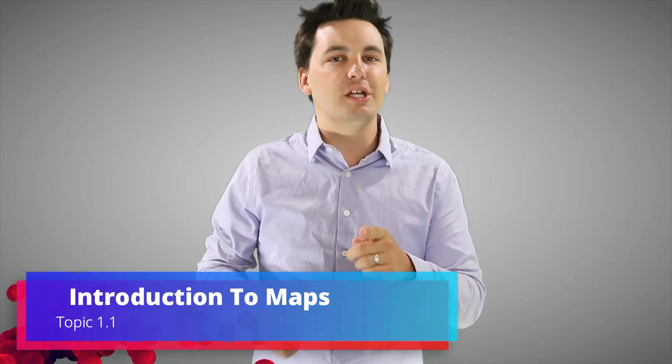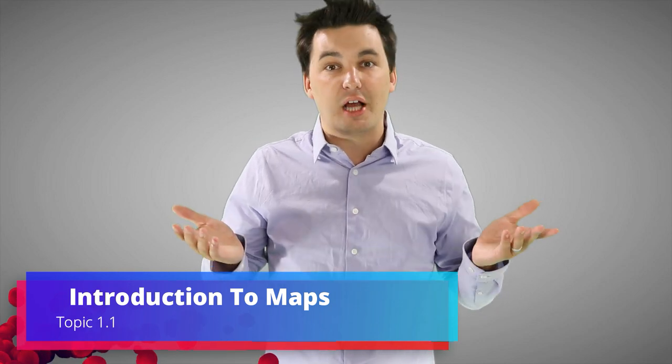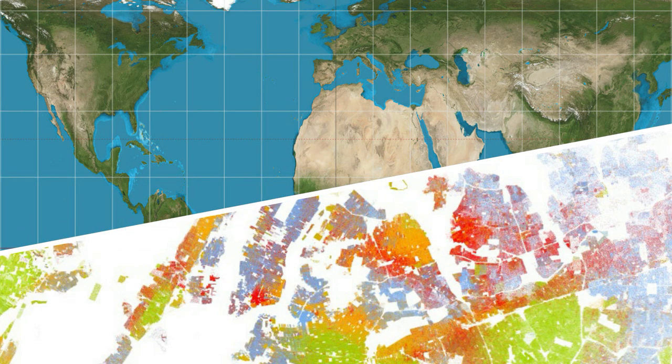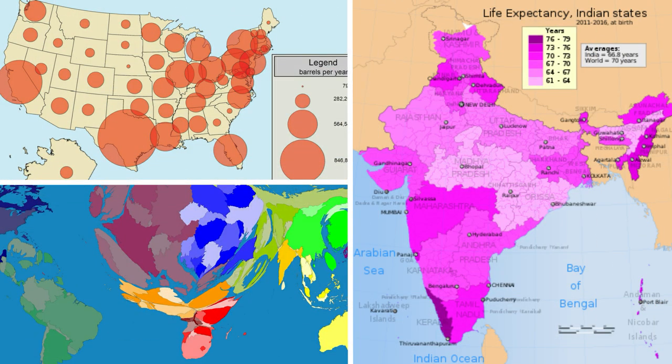So without further ado, let's start learning about topic 1.1 where we're going to be talking about what else? Maps. Now there is a bunch of different maps out there and each map we look at throughout this course is going to be presenting us with different types of information. And each map has different strengths and weaknesses.